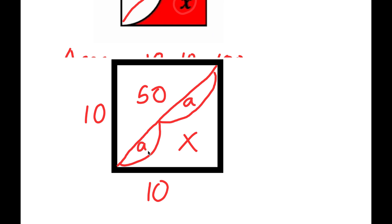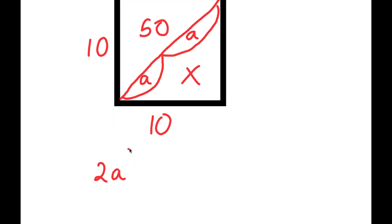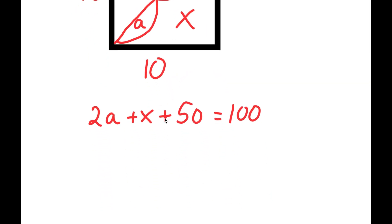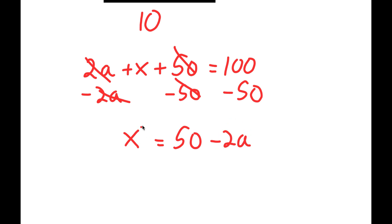This region is labeled a and this one is also a, meaning these two combined would be 2a. So 2a plus x plus 50 is equal to 100, because the total area is 100. If I subtract 2a and 50 from both sides, these cancel out and I get x is equal to 50 minus 2a. All we need to do is find the value of a to get our value of x.